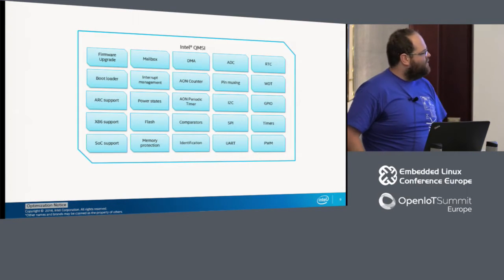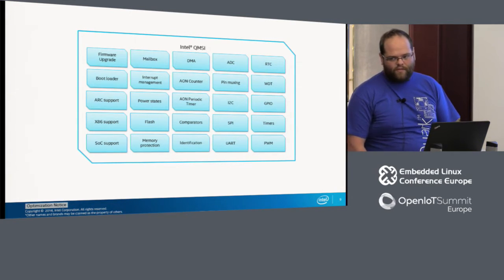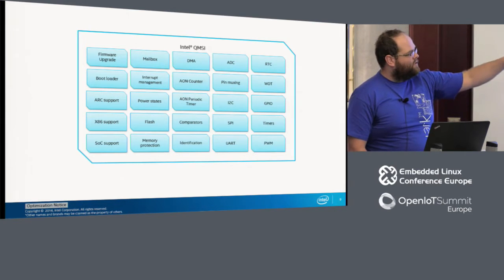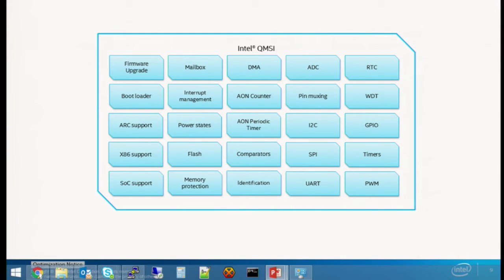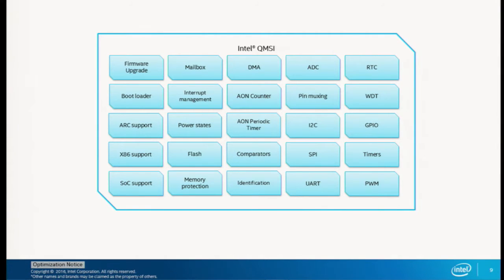QMSI covers all the different IPs and peripherals. There's also an identification feature so at runtime you can determine which SoC you're running on, enabling a single binary to behave differently on different hardware — useful if you don't want to make that decision at compile time.